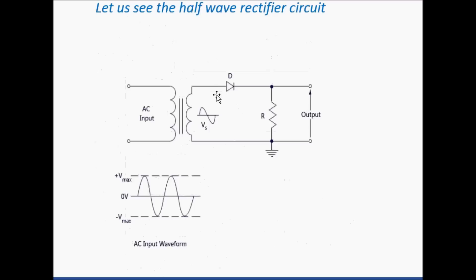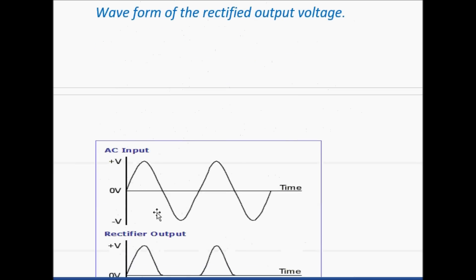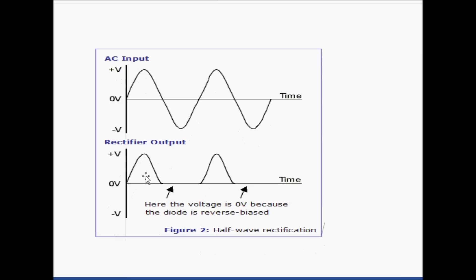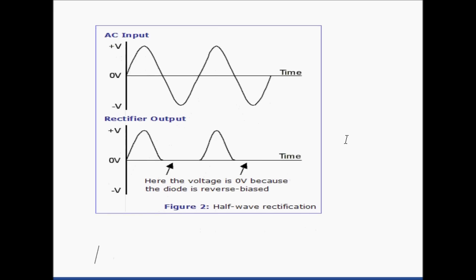If we rotate the diode — if we change the direction of the diode — then in the negative half cycle current will flow only, and the positive half cycle will act as an open circuit. The output waveform would then be only the negative half cycles. The upper portion, the positive half cycle, acts as an open circuit. The rectified output voltage at the positive side is zero because the diode is reverse biased.